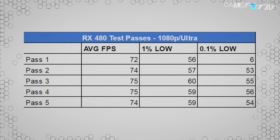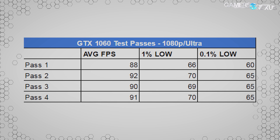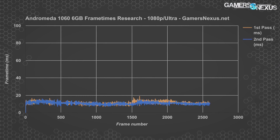Here's a raw data table from our RX 480 8GB Gaming X at 1080p Ultra. The first test pass shows 72 FPS average with 56 FPS 1% lows and 6 FPS 0.1% lows. This shows itself in stutters during the first pass, but smooths out in subsequent testing — within about a minute normally — improving from roughly 6 FPS 0.1% lows to 53 in the second pass. To contrast versus NVIDIA, the GTX 1060 6GB Gaming X at 1080p Ultra posts a 60 FPS 0.1% low for the first pass, then 65 for later passes. The difference isn't visible and isn't anywhere near what we saw with AMD, but it is consistent and measurable.